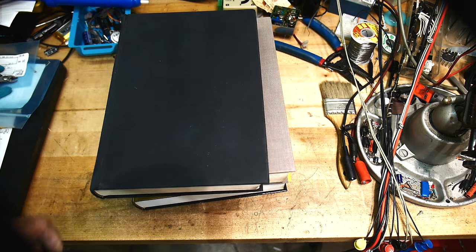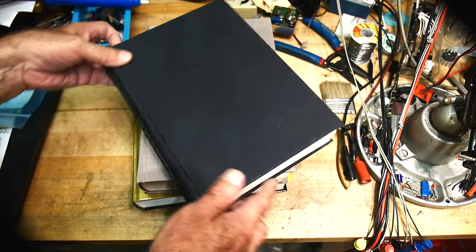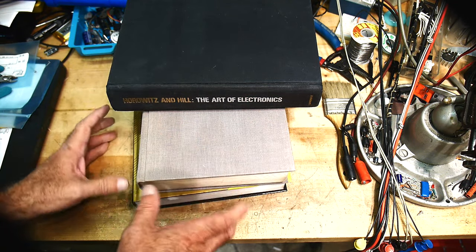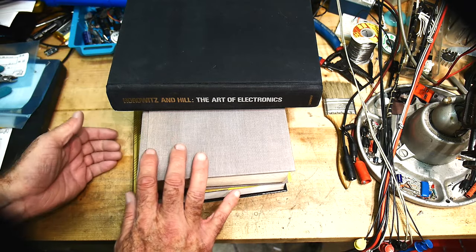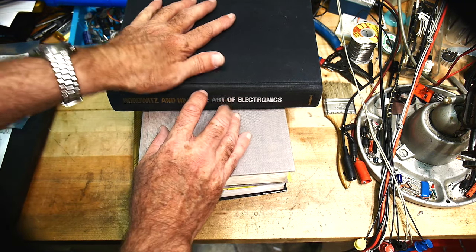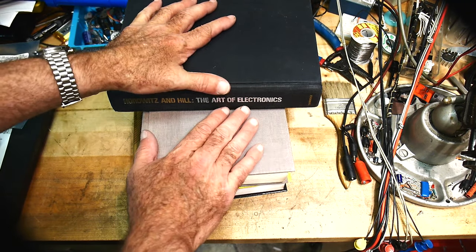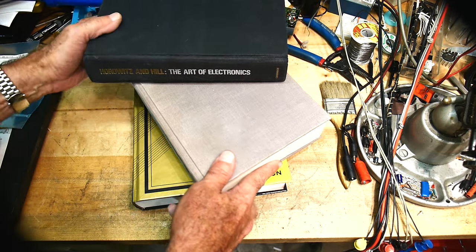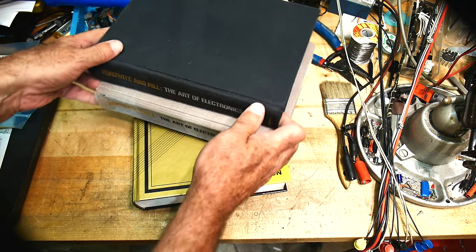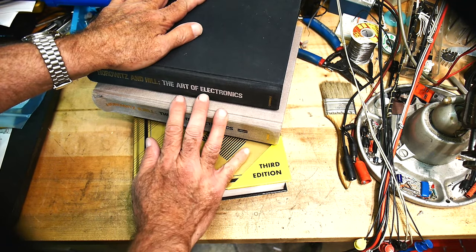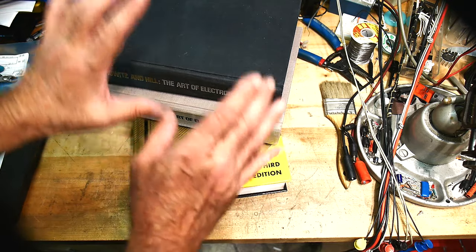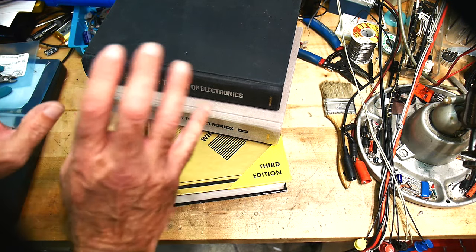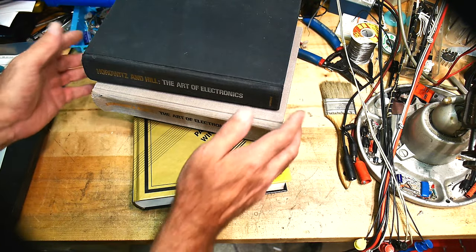Or first edition. Same thing. They all have the same information. They get updated a little bit. And actually some things get deleted. So there's actually some chapters in the old books that are nice to have around because they're not in the new books. So anyway, Horowitz and Hill Art of Electronics. Edition 1, Edition 2, or Edition 3. Doesn't matter which one you get. Get one. Get the one you can afford. And get one. I mean please get one.